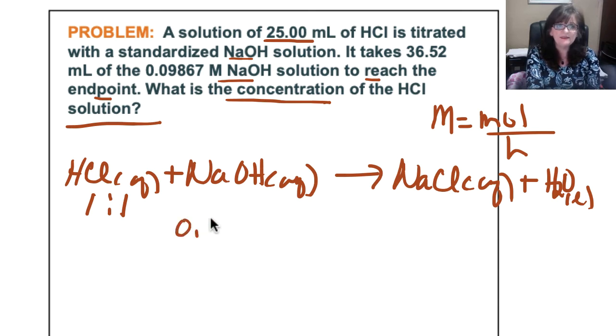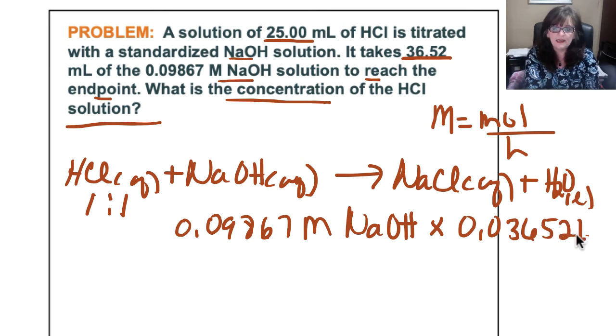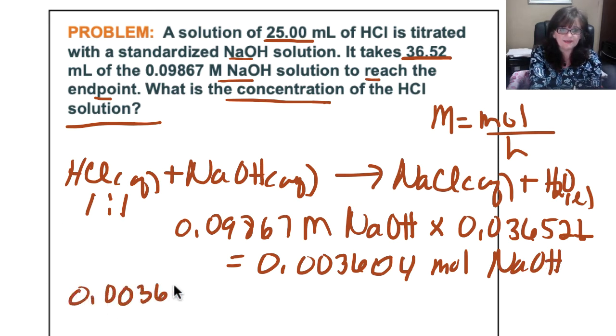So we'll take the 0.09867 molar sodium hydroxide and multiply by the volume. So they told us it takes 36.52 milliliters, so we have to convert that to liters. Put this into the calculator, so 0.09867 times 0.03652, and I get 0.003604 moles of sodium hydroxide.